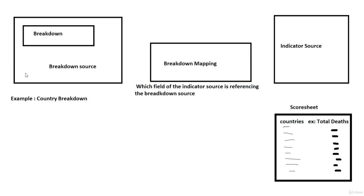In the breakdown source, you define which table you are using and what conditions apply. In our case, the breakdown source will be the core country table, which returns the list of all countries. I'll add a condition such that the total confirmed cases should be more than zero. We can also have a related list condition.